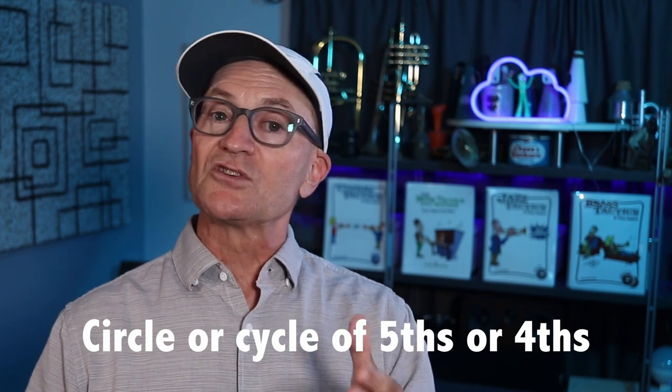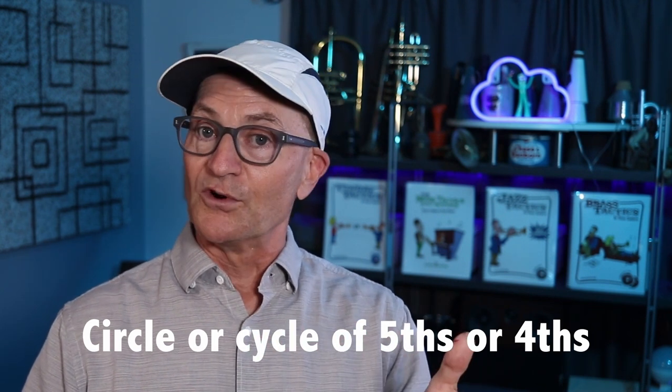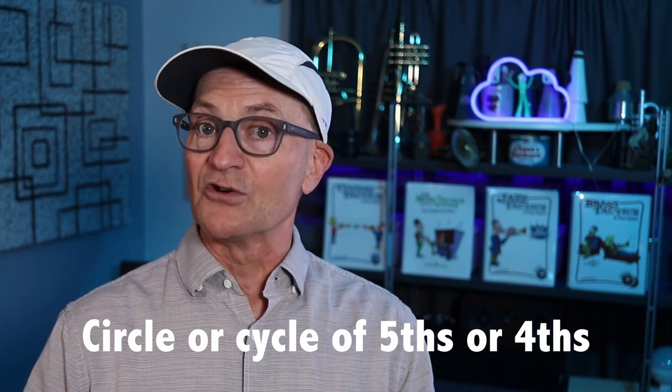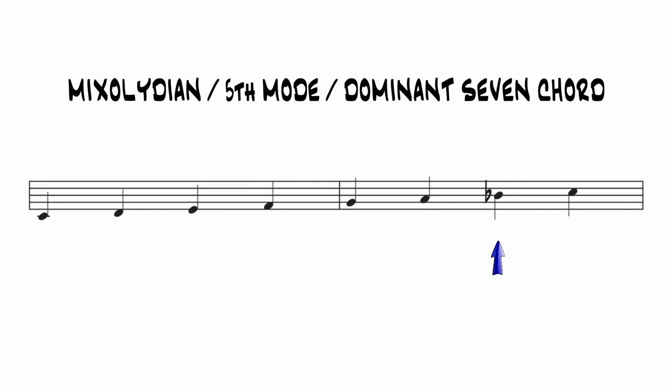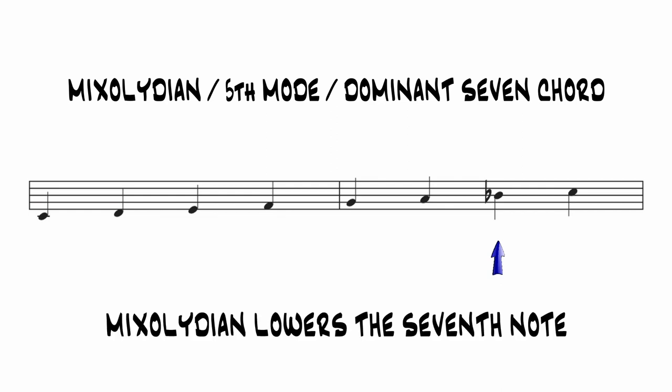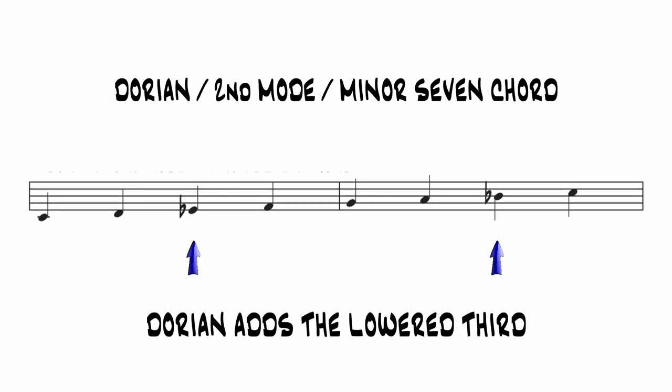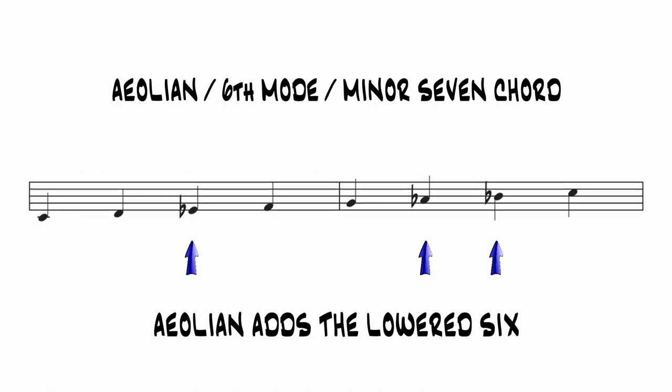There are only three more major modes, and to understand how the alterations are added to them, it's useful to refer to the circle of fifths — which some people might call the circle of fourths, or a cycle of fifths or fourths, because going down a fifth takes you to the same note as going up a fourth, and vice versa. Taking the key of C as an example: Mixolydian lowers the 7th note, which is Bb. Dorian adds the flat 3, which is Eb. Eb is a 5th below Bb. What's a 5th below Eb? Ab, which is the lowered 6 in the key of C. A scale with a lowered 7, a lowered 3, and a lowered 6 is called Aeolian. Aeolian is the 6th mode, and it produces a minor 7 chord built on the 6th degree of the major scale.